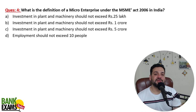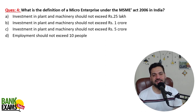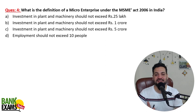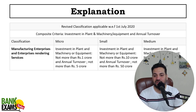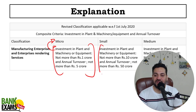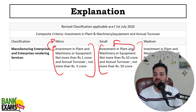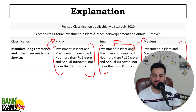Micro enterprise ka definition kya hai? Yeh baar baar paper mein aata hai — kisi bhi credit wale exam ko dekh lo. To: investment in plant and machinery should not exceed one crore, and annual turnover should not exceed five crore — toh yeh micro maana jayega. Agar investment not more than ten crores and annual turnover not more than fifty crore — toh yeh small mein aayega. Aur medium mein: investment not more than fifty crore and annual turnover not more than two hundred fifty crore.